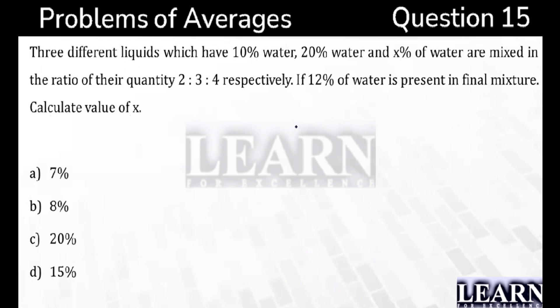Three different liquids which have 10% water, 20% water and X% of water are mixed in the ratio of 2 is to 3 is to 4 respectively. If 12% of water is present in the final mixture, calculate the value of X.